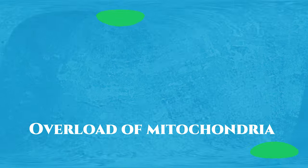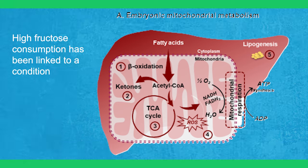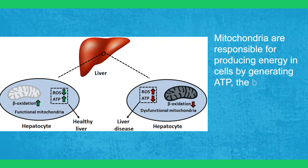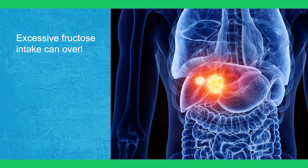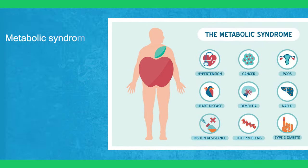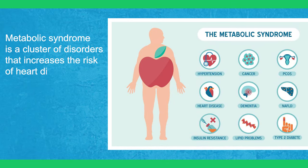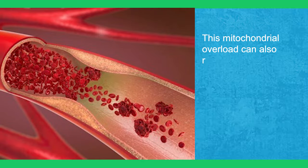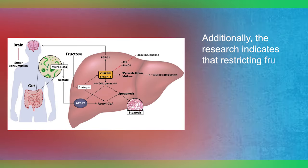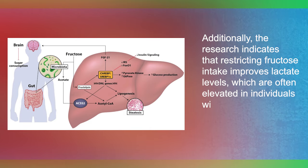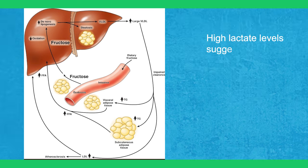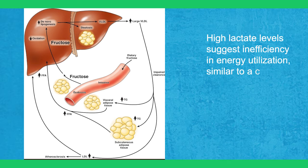High fructose consumption has been linked to a condition called mitochondrial overload in the liver. Mitochondria are responsible for producing energy in cells by generating ATP, the body's primary energy currency. Excessive fructose intake can overload the mitochondria in the liver, leading to dysfunction and contributing to the development of metabolic syndrome — a cluster of disorders that increases the risk of heart disease, stroke, and diabetes. This mitochondrial overload can also result in organ-specific dysfunction, such as high blood pressure. Additionally, research indicates that restricting fructose intake improves lactate levels, which are often elevated in individuals with metabolic disorders. Lactate is a byproduct of the body's energy production process, and high lactate levels suggest inefficiency in energy utilization, similar to a car burning excessive fuel.